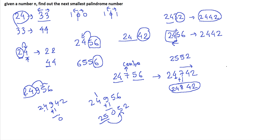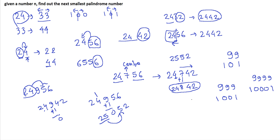Another edge case: if the number is 99, the next palindrome is 101; if the number is 9999, the next palindrome is 10001. When the entire left section is made up of only 9s, the answer is 1 followed by (number of digits minus 1) zeros followed by 1. For 4-digit 9999 that gives 10001.